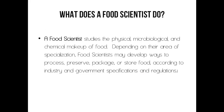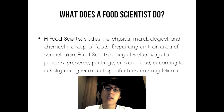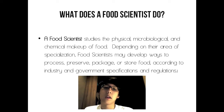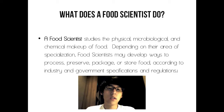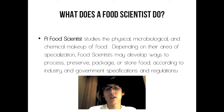What does a food scientist do? A food scientist studies the physical, microbiological, and chemical makeup of food. Depending on their area of specialization, food scientists may develop ways to process, preserve, package, or store food according to industry and government specifications and regulations.